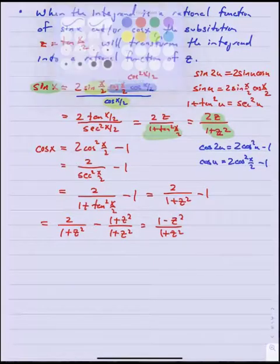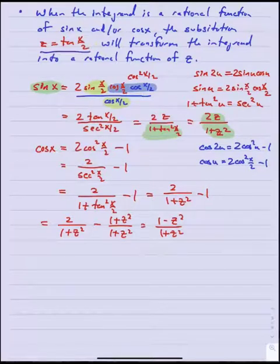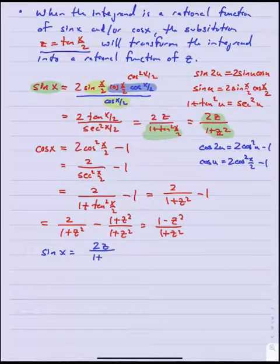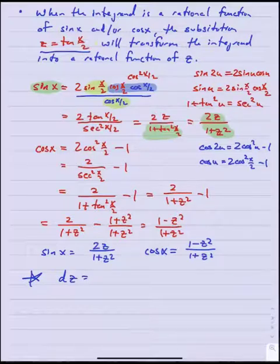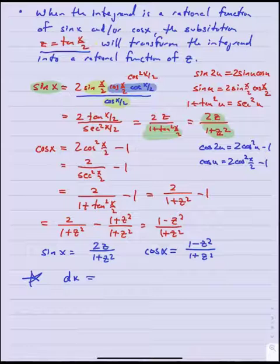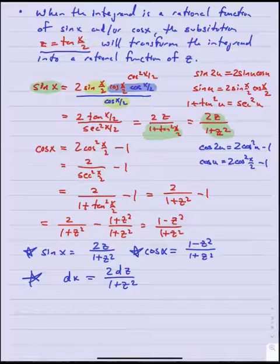So summing up what we've got: under this substitution z equals tan(x/2), sine x becomes 2z over 1 plus z squared, cosine x becomes 1 minus z squared over 1 plus z squared. I'll leave it for you to verify that dx is actually going to be 2 dz over 1 plus z squared. With these three formulas I can rewrite any integrand that's a rational function of sine and cosine completely in terms of rational functions of z.